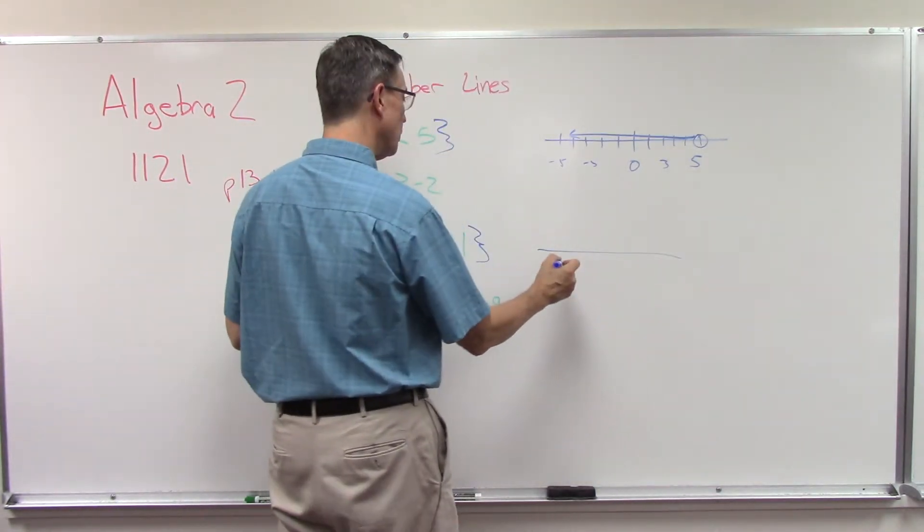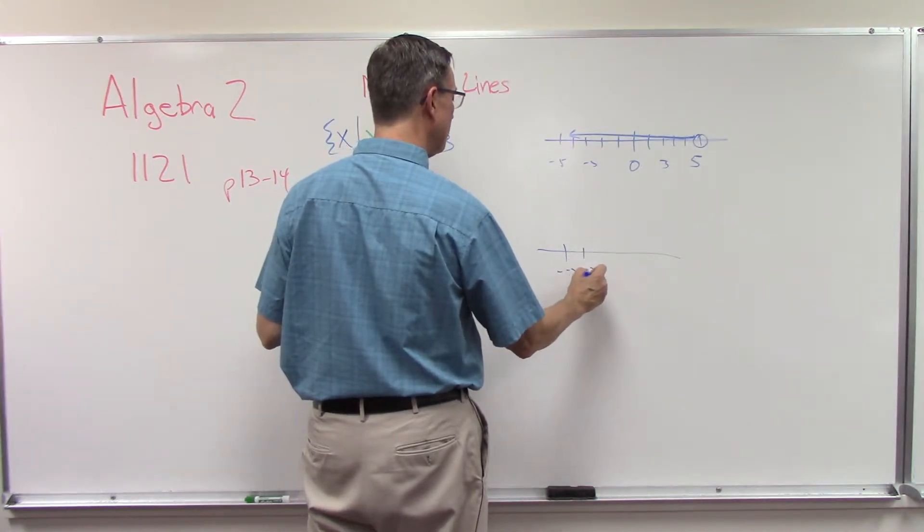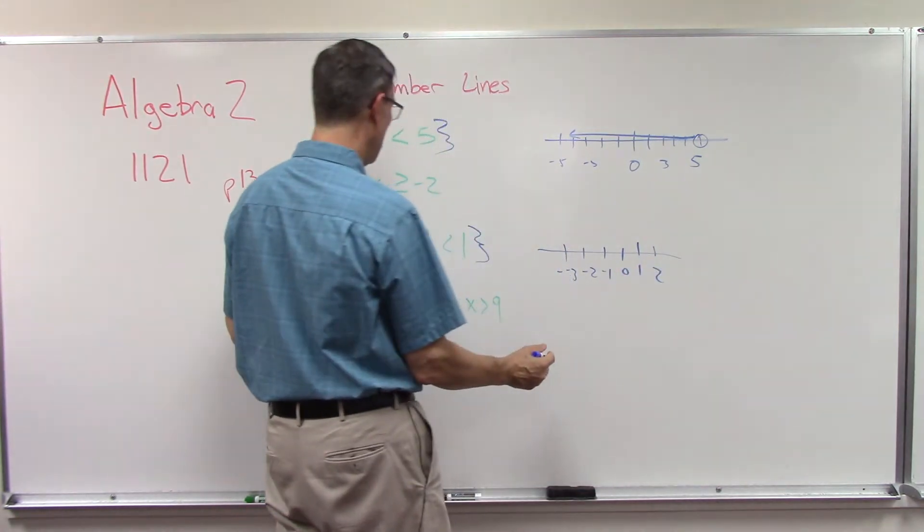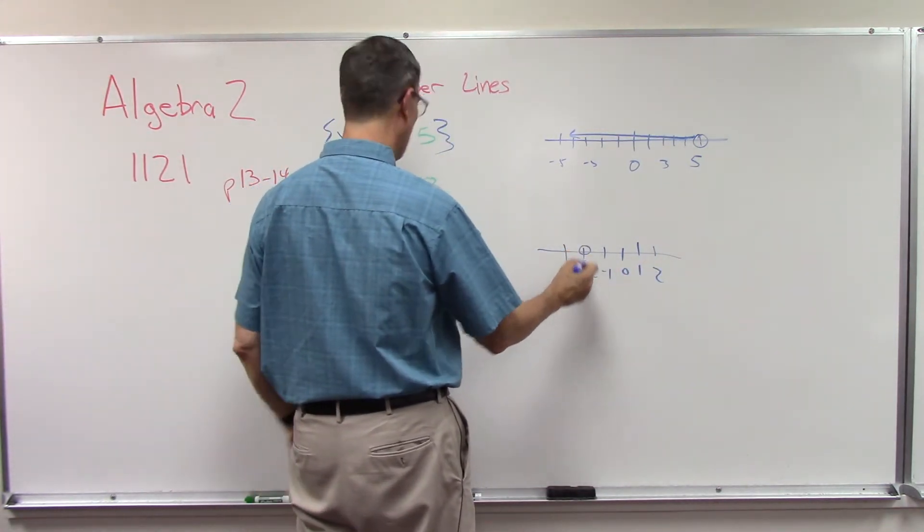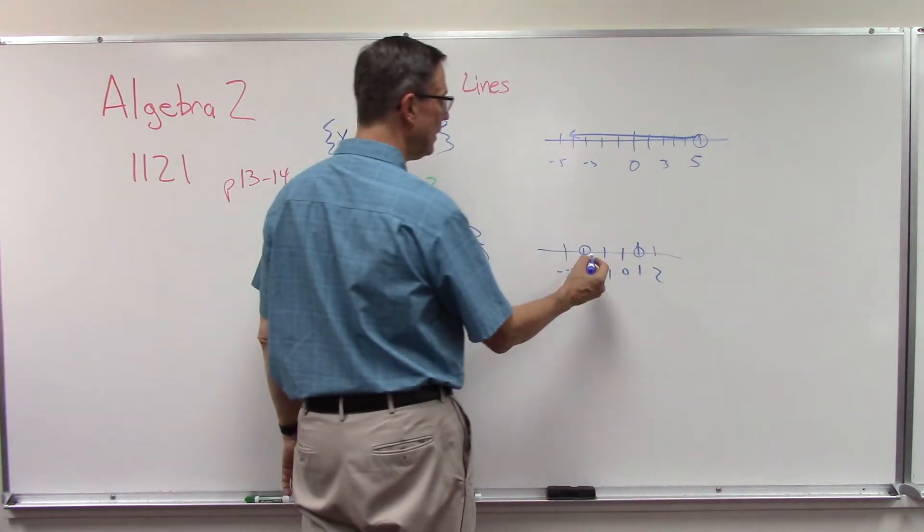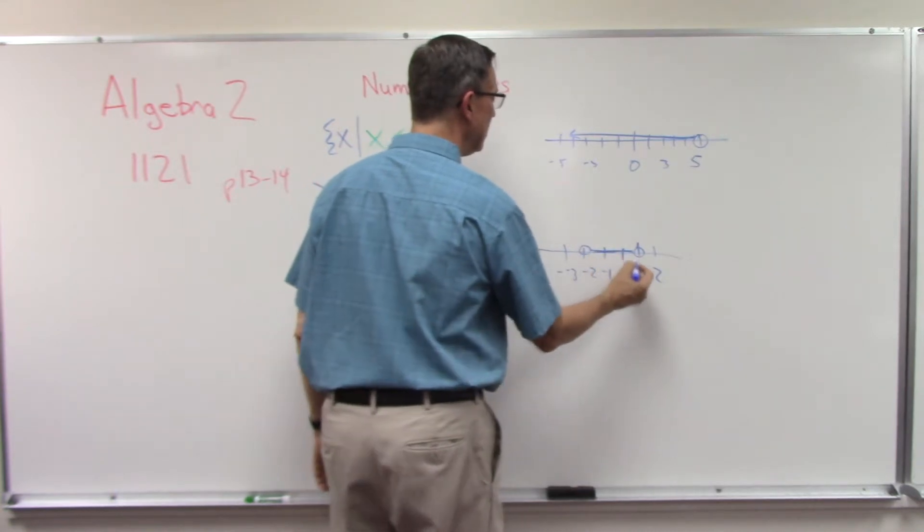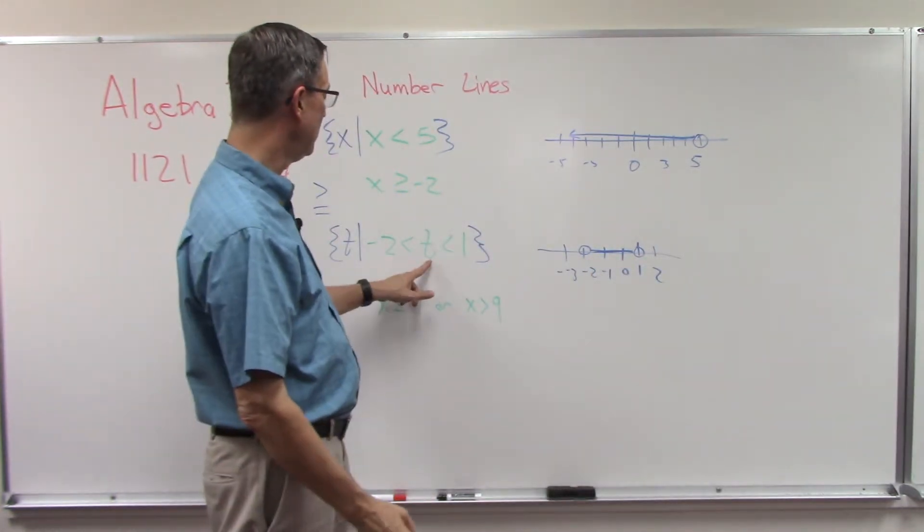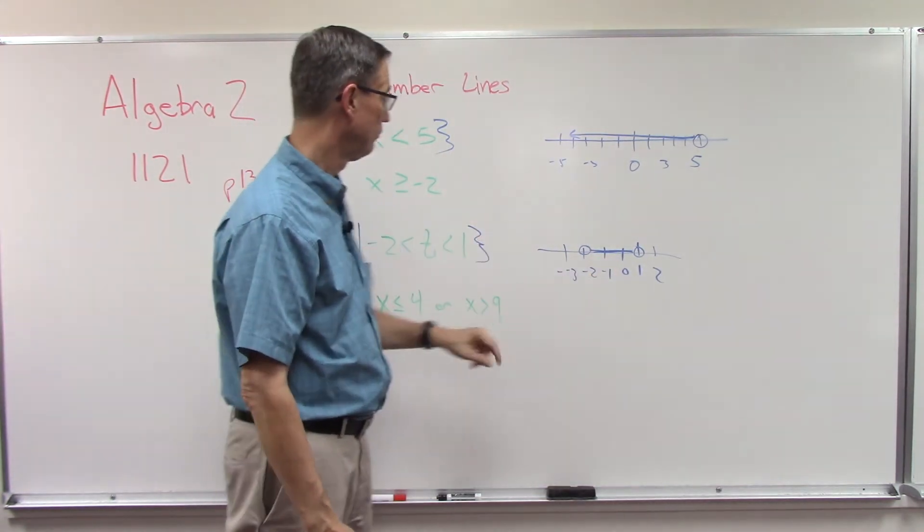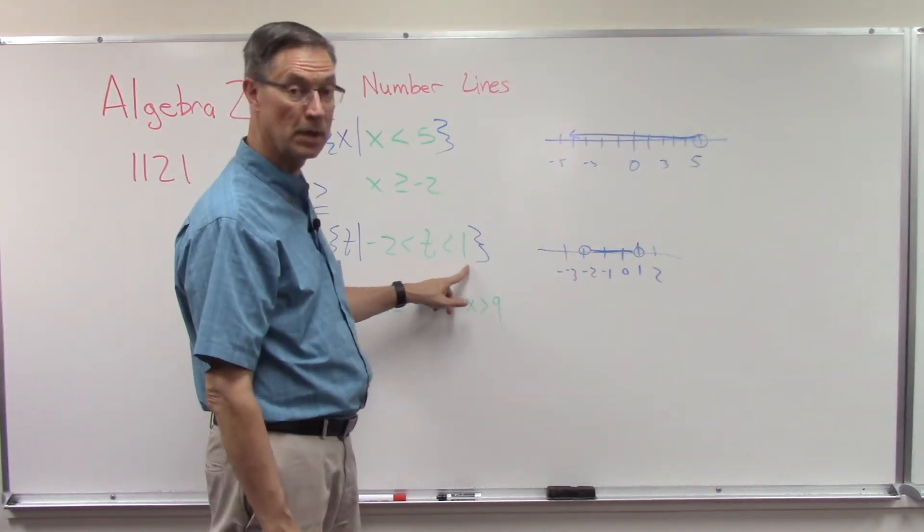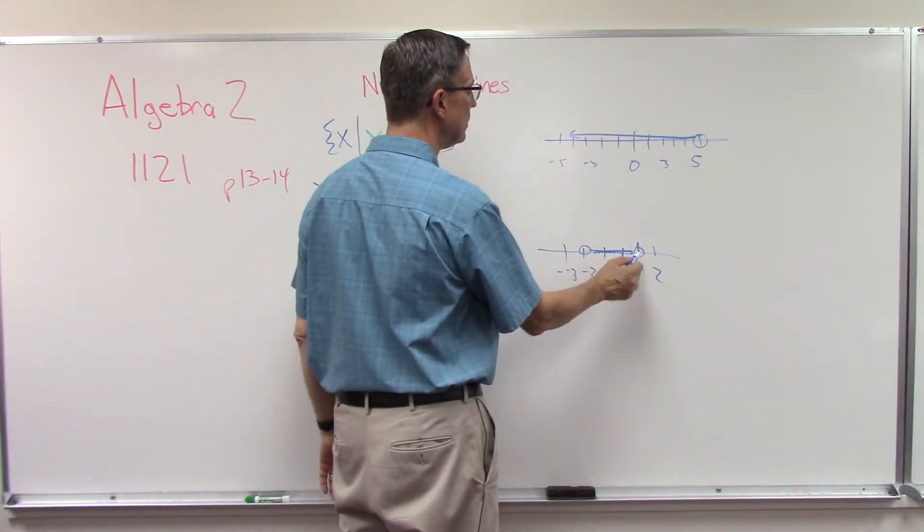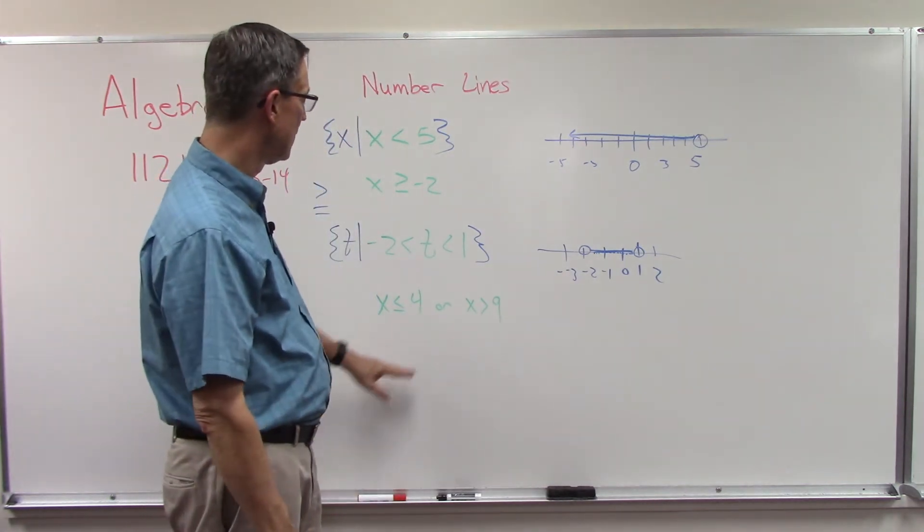So in graphing it, I'm going to do negative 3 just so I have a number to the left of it. Here's negative 1, zero, 1, 2. So I'm going to put an open circle over negative 2 and an open circle over 1, and then we connect them. So it's everything in between. Negative 1 is greater than negative 2, but negative 1 is less than 1. Zero is greater than negative 2, but it is less than 1. So everything underneath here, including all of these fractions and decimals, meet both conditions.